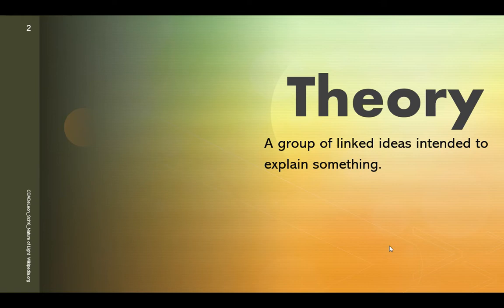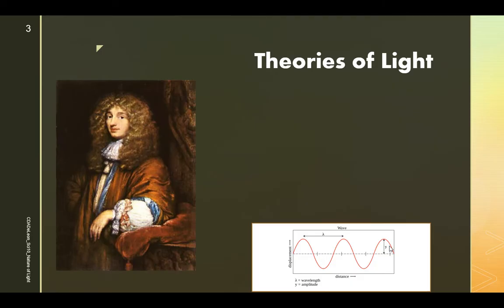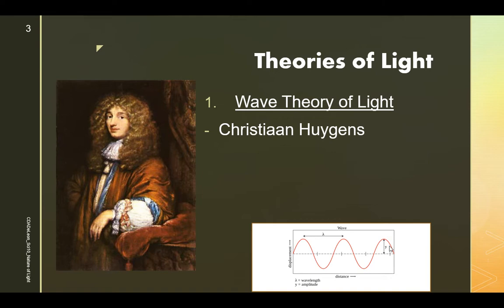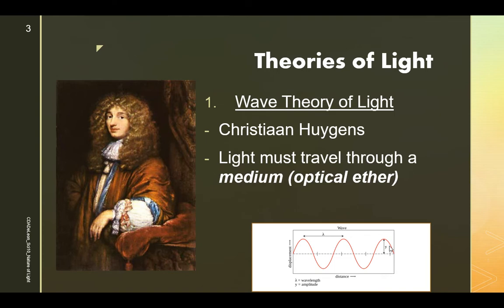The first is the wave theory of light, proposed by Christian Huygens in 1678. Dutch physicist Christian Huygens believed that light was made up of waves vibrating up and down, perpendicular to the direction in which the light travels, and therefore formulated a way of visualizing wave propulsion.